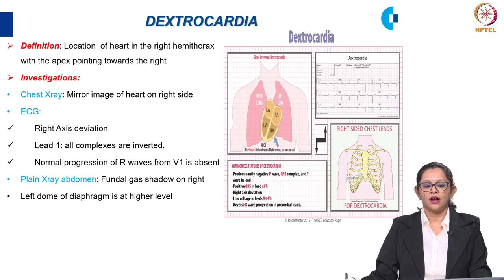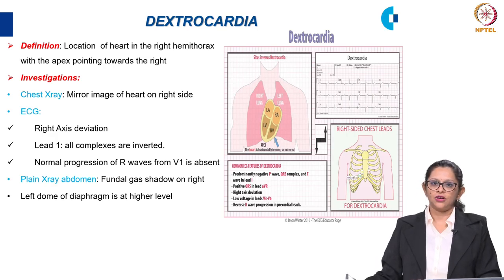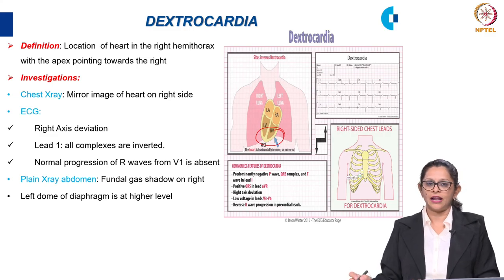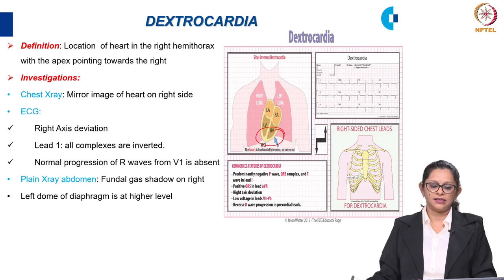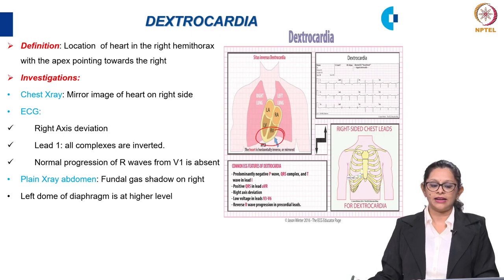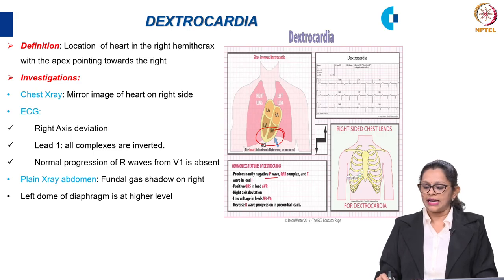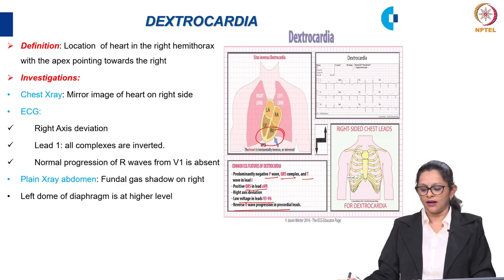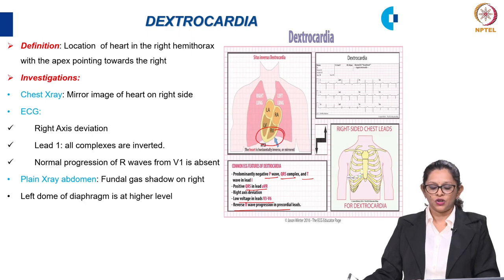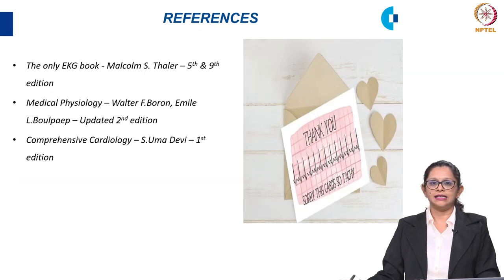To complete this session, a few points on dextrocardia. Dextrocardia is defined as a condition where the location of the heart is in the right hemithorax with the apex pointing toward the right — an abnormal condition. A chest X-ray shows a mirror image of the heart on the right side. ECG is very classical: it will show right axis deviation and all complexes will be inverted. Predominantly negative P wave, QRS complex and T wave in Lead I, a positive QRS in Lead AVR, low voltage in V3 to V6 leads, and reverse R wave progression in the precordial leads. An X-ray abdomen can also show fundal gas shadow on the right side, with the left dome of the diaphragm at a higher level. Thank you for your patient listening and happy learning.